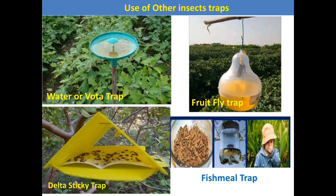Other traps include the water trap, which is mostly used to attract the brinjal shoot and fruit borer — one of the major pests of brinjal. When installed in brinjal crop cultivation, the male adult of the brinjal shoot and fruit borer is attracted toward the lure and killed in a kerosene and water pesticide solution. The fruit fly trap is very effective against all fruit fly species and is mostly used in cucurbit crops and fruit crops. The delta sticky trap is used against different flies and leaf miners. The fish meal trap is mostly used against different shoot fly and stem borer species in cereal crops.